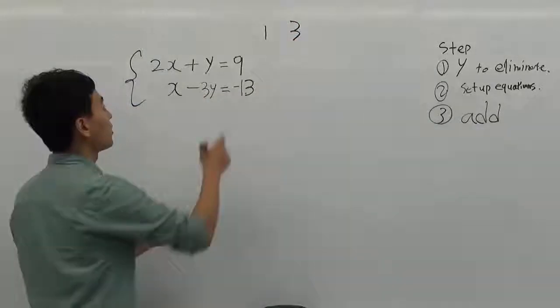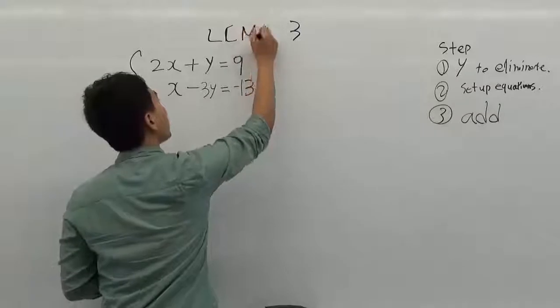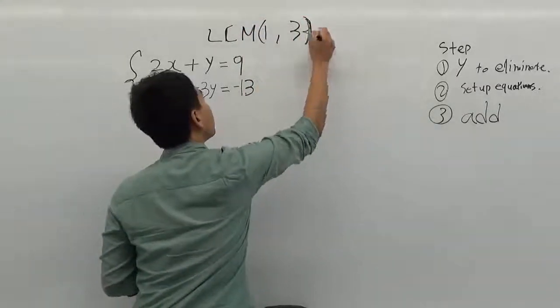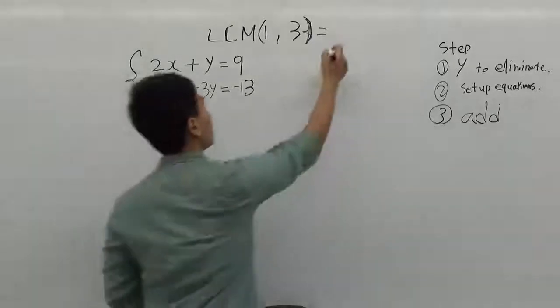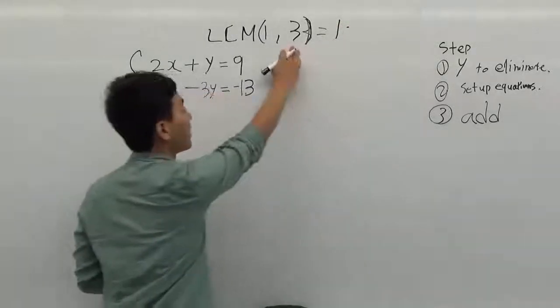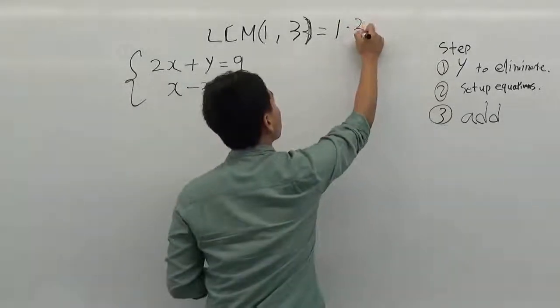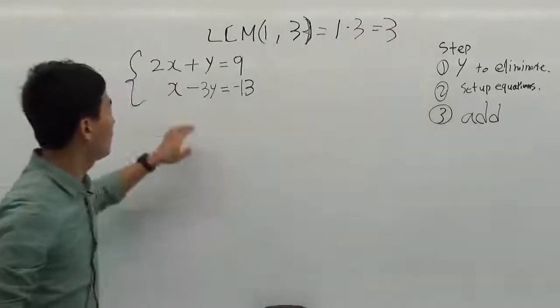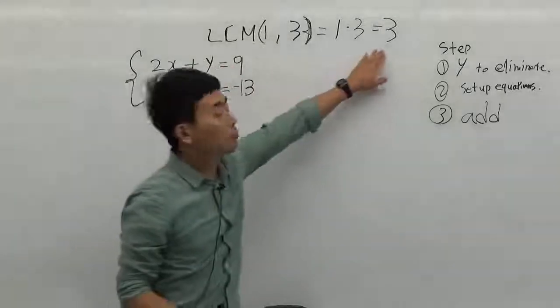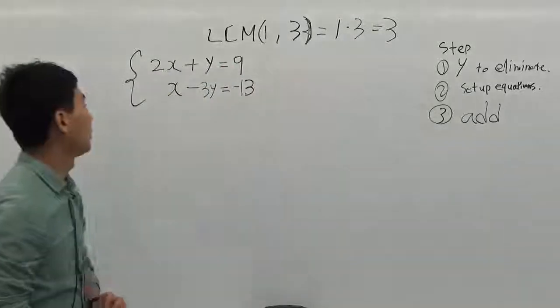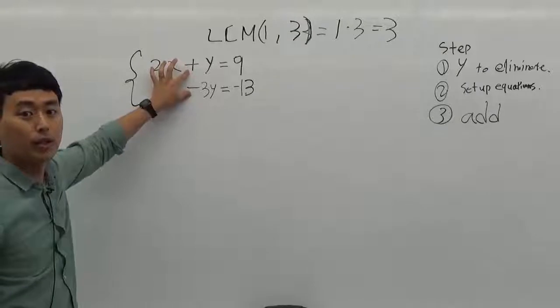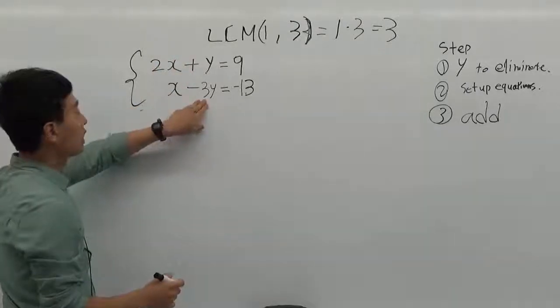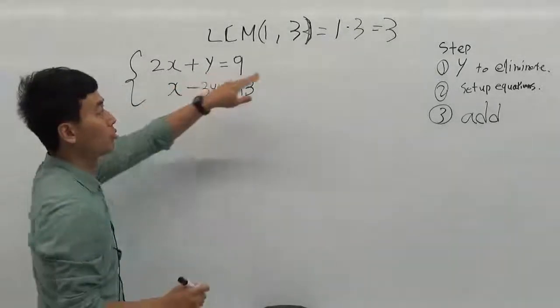We have to find the LCM of 1 and 3. 1 is just 1, and 3 is the prime number, so I just multiply 1 times 3, which is 3. The coefficient of y should be 3. We don't have to think about the sign, because we can add two equations. This already has 3, and this is 1, so we have to multiply by 3.